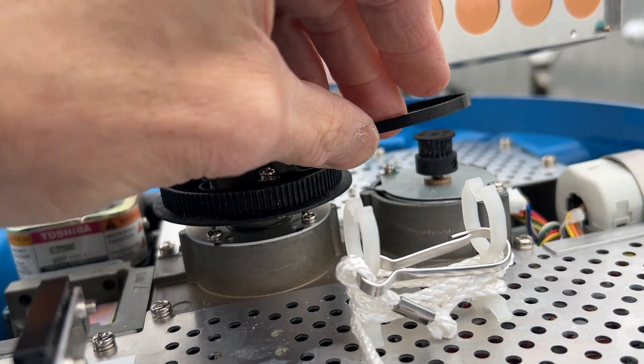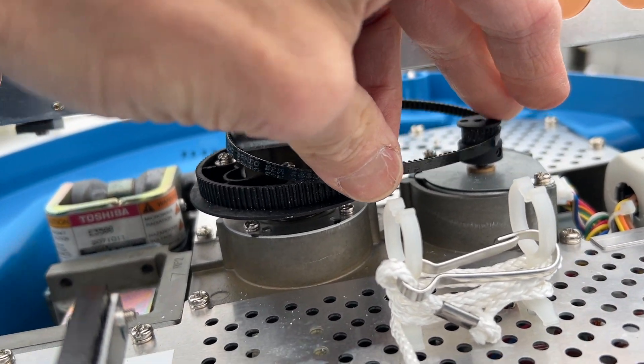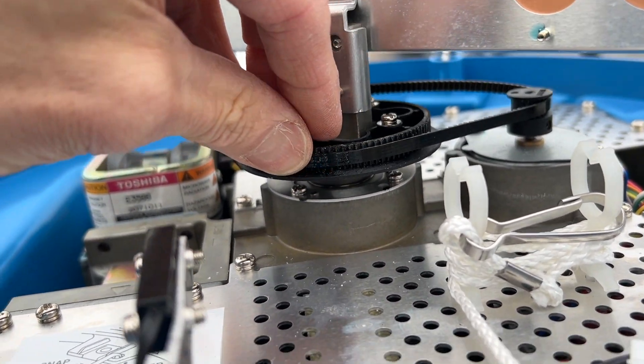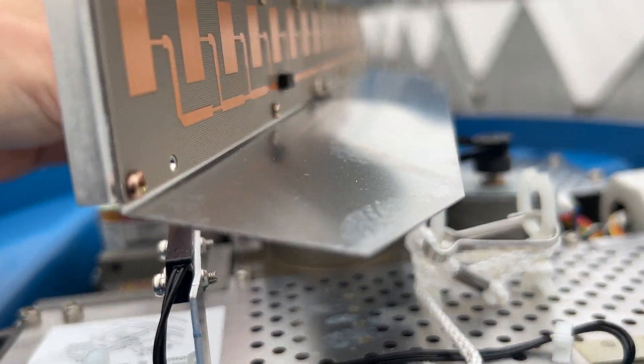Now we'll put the belt back on. So everything's pretty tight here but we're going to put the belt on the gear for the motor first and then just spin this to get it on.